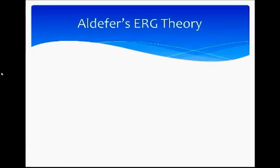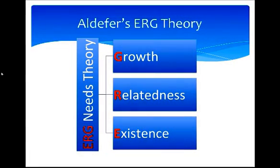The last content theory discussed here is Alderfer's ERG Theory. Clinton Alderfer classified human needs into three categories: Existence, Relatedness, and Growth. This theory is actually a modification of Maslow's Need Hierarchy Theory. Existence corresponds to Maslow's physiological needs and security needs. Relatedness corresponds to Maslow's social needs and the external component of ego needs. Growth corresponds to Maslow's internal component of ego needs and self-actualization needs. The key difference is that while Maslow assumed a strict hierarchy of needs, Alderfer says needs can occur in any order and even two needs can be active simultaneously.